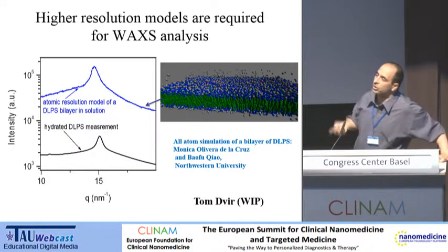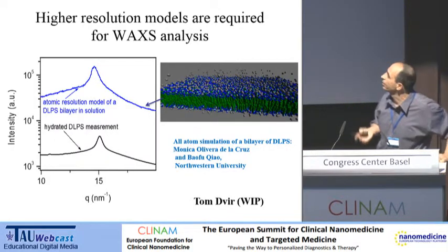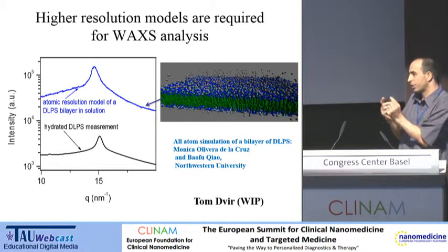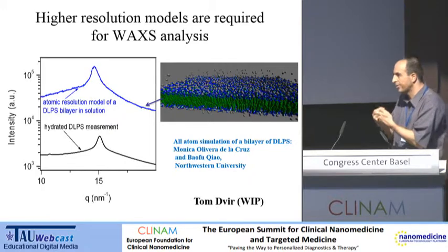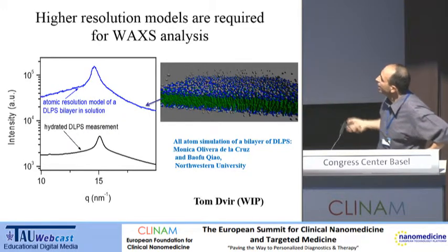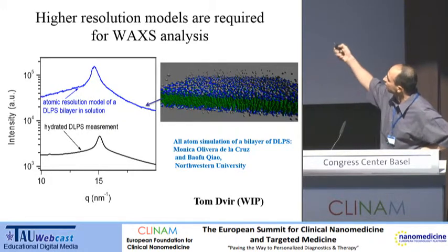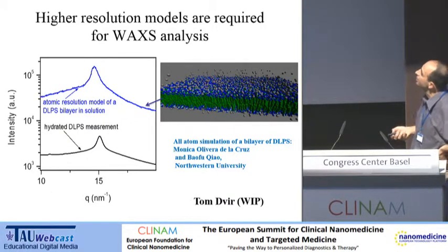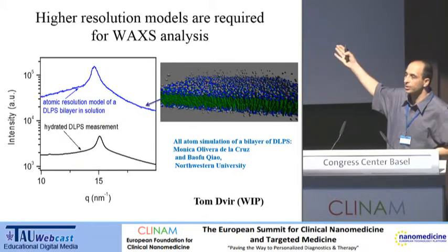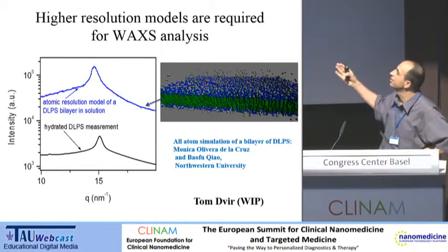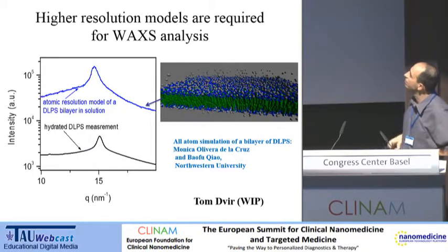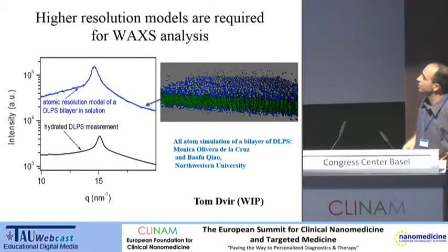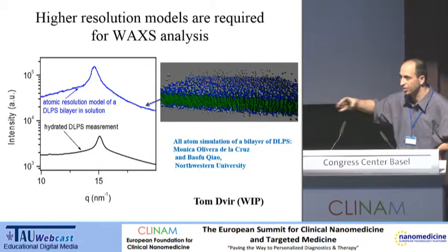You can also do wide-angle X-ray scattering to get information about the organization of lipids within the bilayer — domain size or lattice parameters. For example, with DLPS combined with molecular dynamics simulations, if you have high-resolution simulations, you can calculate the X-ray scattering and compare with experiment to get the organization of the lipids.